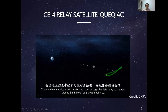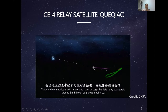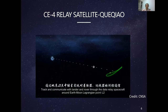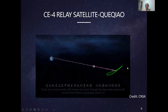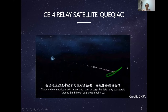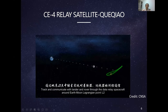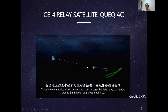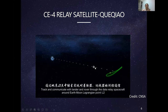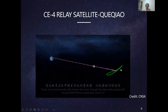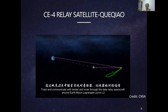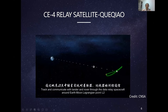For Chang'e 4, the situation is different because it landed on the lunar far side, which does not face Earth, so the rover cannot send data directly to Earth. Instead, a relay satellite called Queqiao facilitates communication between the Chang'e 4 lander and rover on the far side and ground stations on Earth. The lander and rover send signals to the satellite, which then relays them back to Earth. A payload developed by the Netherlands was installed on this relay satellite.